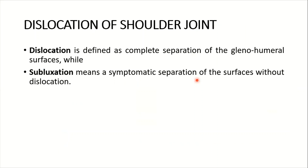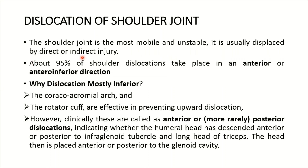Dislocation is defined as complete separation of the glenohumeral surfaces, while subluxation means symptomatic separation of the surfaces without dislocation. The shoulder joint is the most mobile and unstable joint. It is usually displaced by direct or indirect injury. About 90% of shoulder dislocations take place in an anterior or antero-inferior direction. Posterior dislocation is very rare, only about 5%.